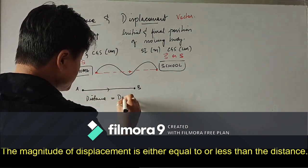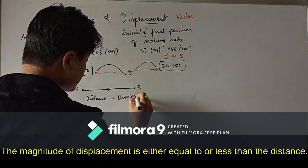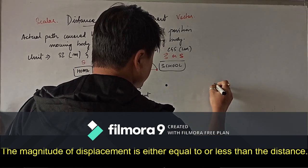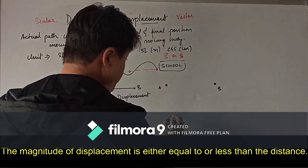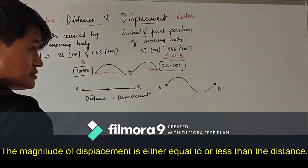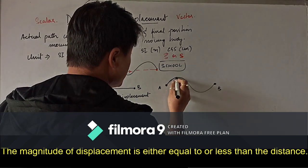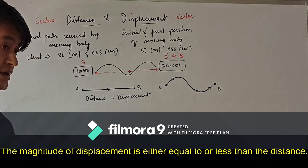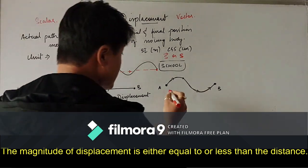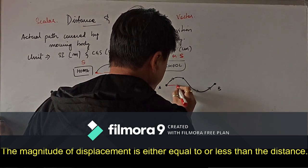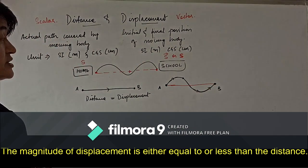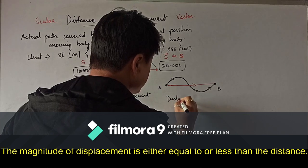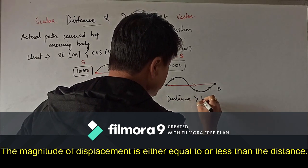The SI unit of both distance and displacement is the meter, and the CGS unit is the centimeter. Distance is represented by S, and displacement is represented by S with an arrowhead. When a body moves from A to B in a straight line, distance equals displacement. But if the body follows a curved path, distance is greater than displacement.